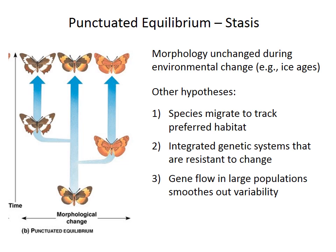However, morphology has also remained fairly stable even through times of environmental change, such as the recent ice ages. Other hypotheses have been proposed: species may migrate to track their preferred environmental conditions; evolution of certain traits may be difficult because the genes controlling those traits also control other aspects of morphology, so changes positive for one trait could be very negative for another. Additionally, many marine invertebrates have larvae that disperse widely, so extensive gene flow may smooth out variability in morphology. These hypotheses are not mutually exclusive.